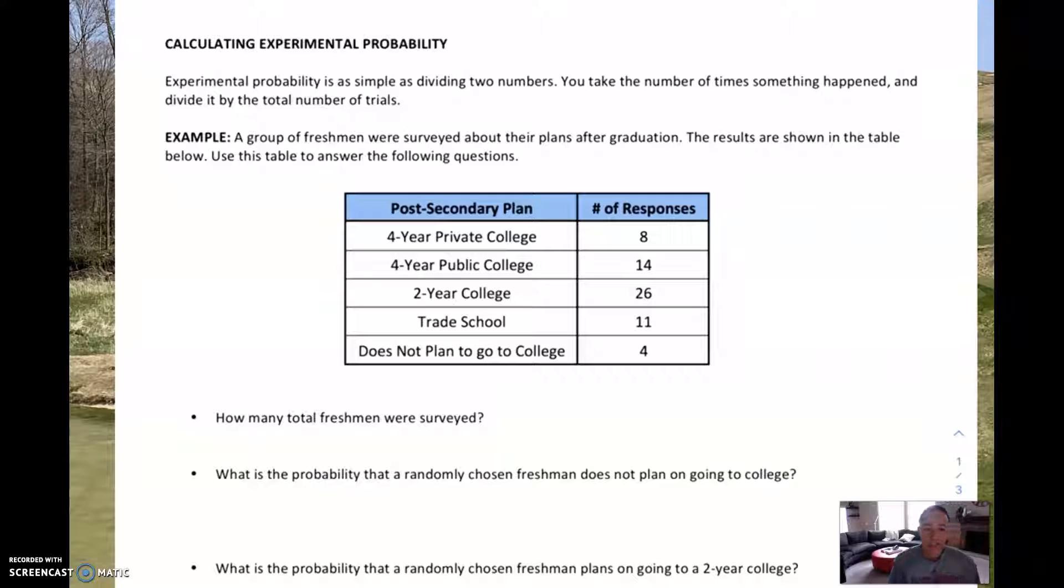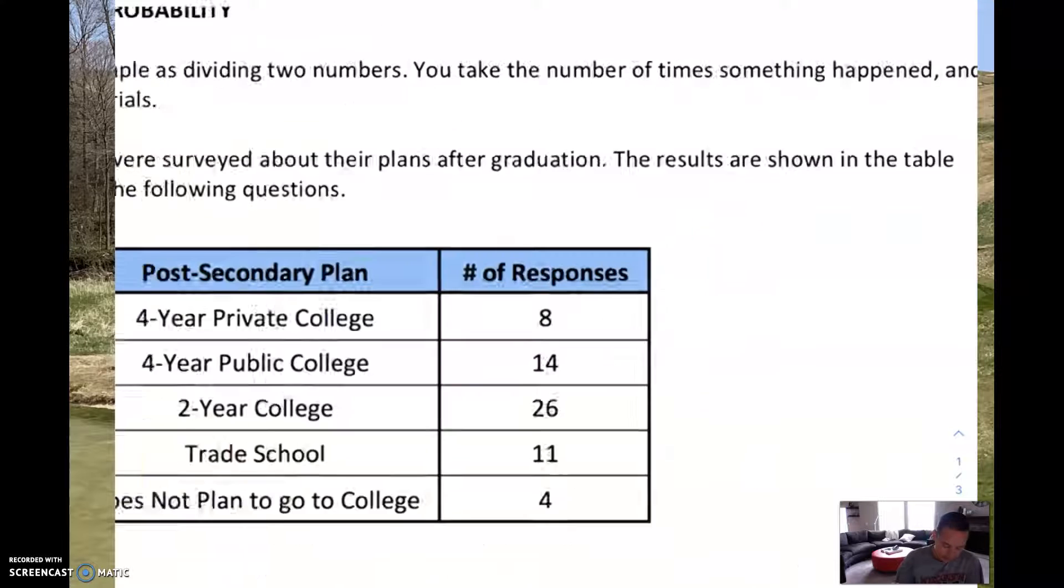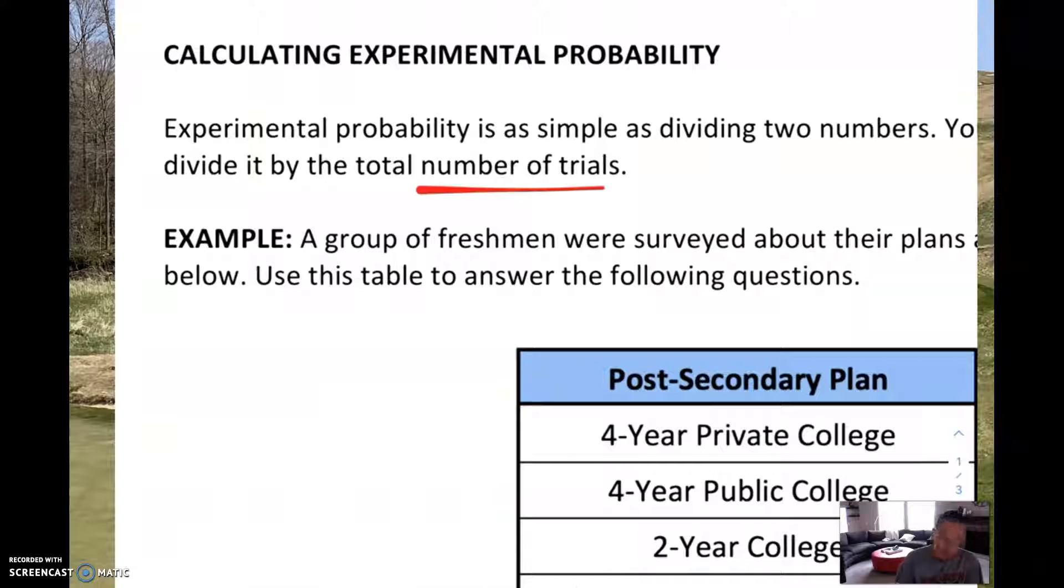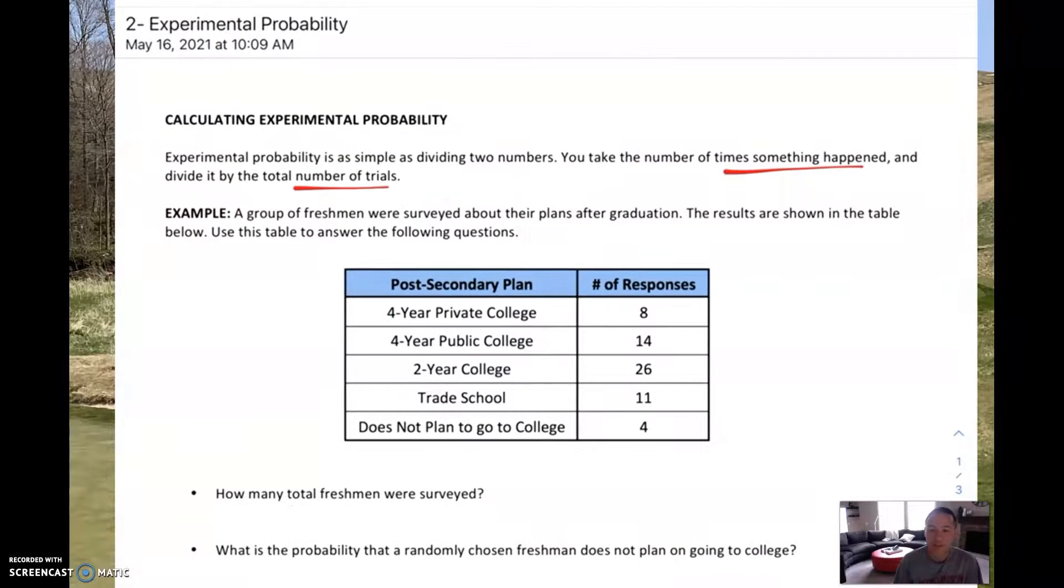We are now moving on to experimental probability. When you think of experiment, you're probably thinking of science, beakers, chemicals, and things blowing up. An experiment can be something as simple as a survey. Basically, with experimental probability, you're doing something a bunch of times and trying to see how often something happens and find the chance. All you have to do is divide two numbers. You take the number of times something happened and divide it by the total number of trials. That's it for experimental probability.